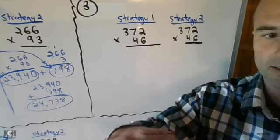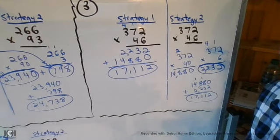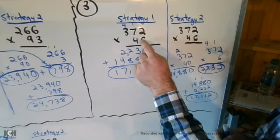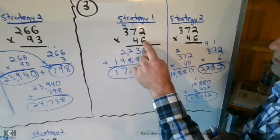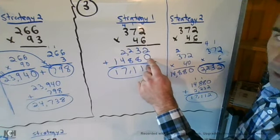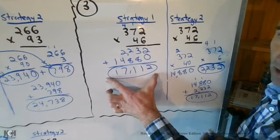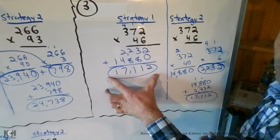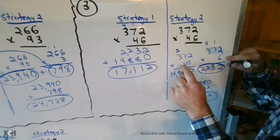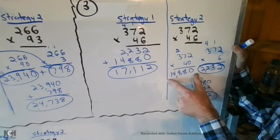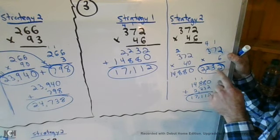Number three — pick a strategy and solve it. Using the first strategy, I did six times two, six times seven, six times three, and got two thousand two hundred thirty-two. Then I pretended this was a zero, brought that zero down to save the place value. Four times two, four times seven, four times three, and got fourteen thousand eight hundred eighty. Added them up to get seventeen thousand one hundred twelve. For the second strategy, I expanded the forty and the six from the forty-six. Three hundred seventy-two times forty gave fourteen thousand eight hundred eighty, and three hundred seventy-two times six gave two thousand two hundred thirty-two, adding to seventeen thousand one hundred twelve.